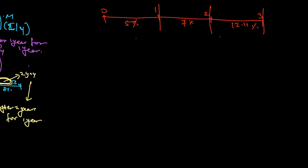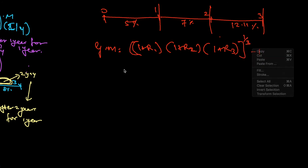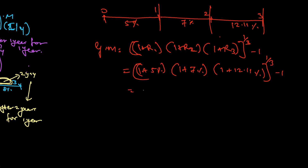To find a single rate for all three years, I calculate the geometric mean: [(1.05) × (1.07) × (1.1211)]^(1/3) − 1. This comes to approximately 7.99%, which is also the interest rate per year — and I can use this geometric mean as IY.